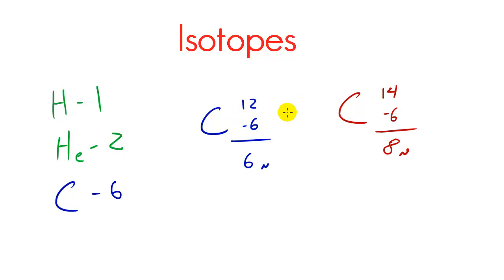So carbon-12 and carbon-14 would be called isotopes. The definition is different forms of a single element. Basically, whenever you have an element with the same number of protons but different number of neutrons, they're called isotopes. Again, one last time, different forms of the same element. So both of these have 6 protons but one has 6 neutrons and the other has 8 neutrons in the nucleus.